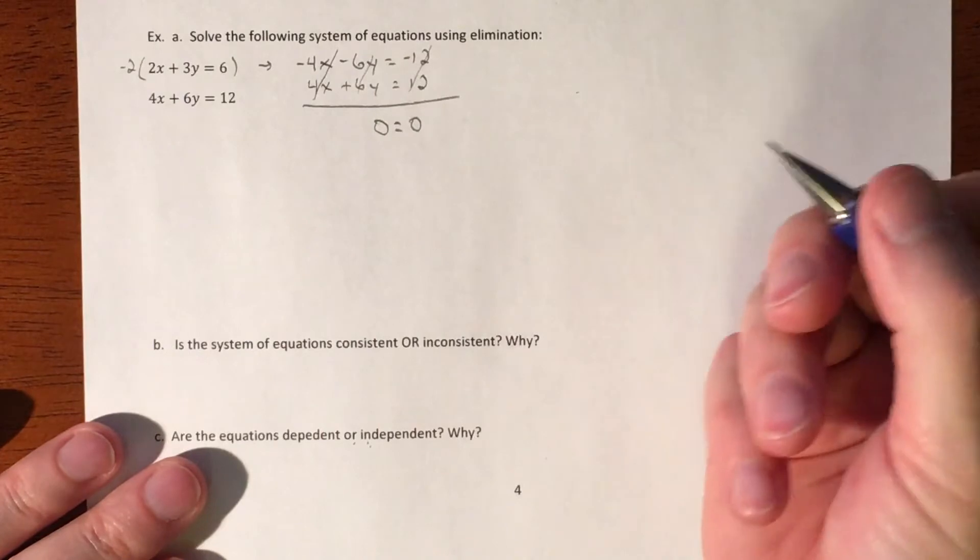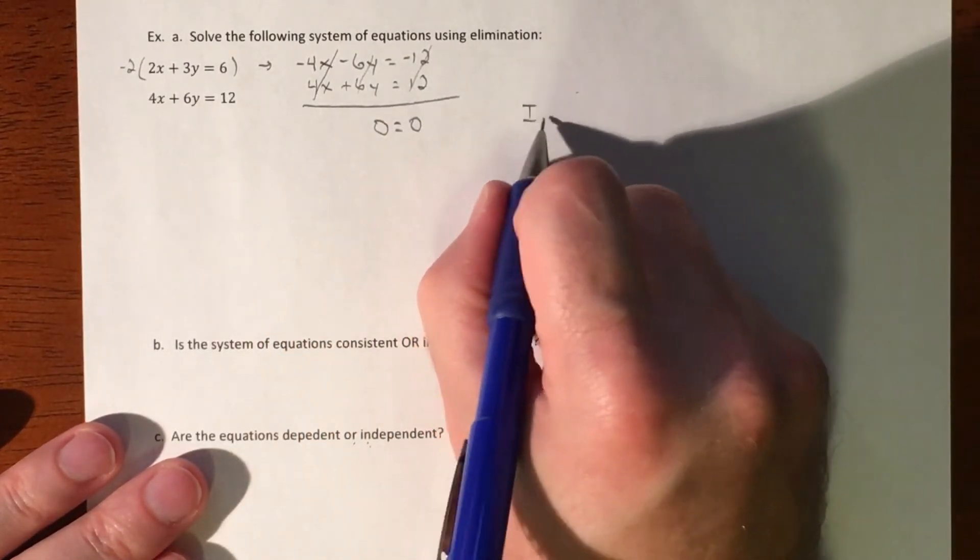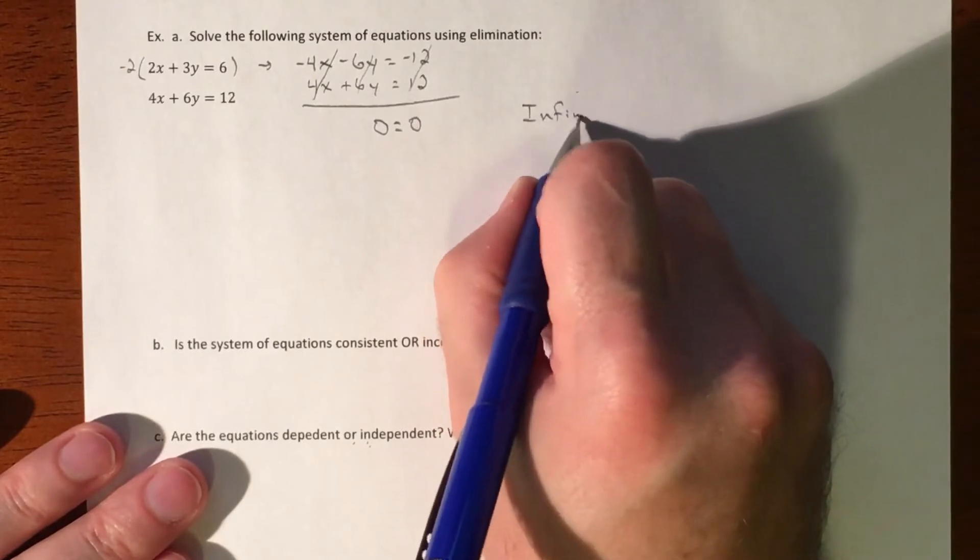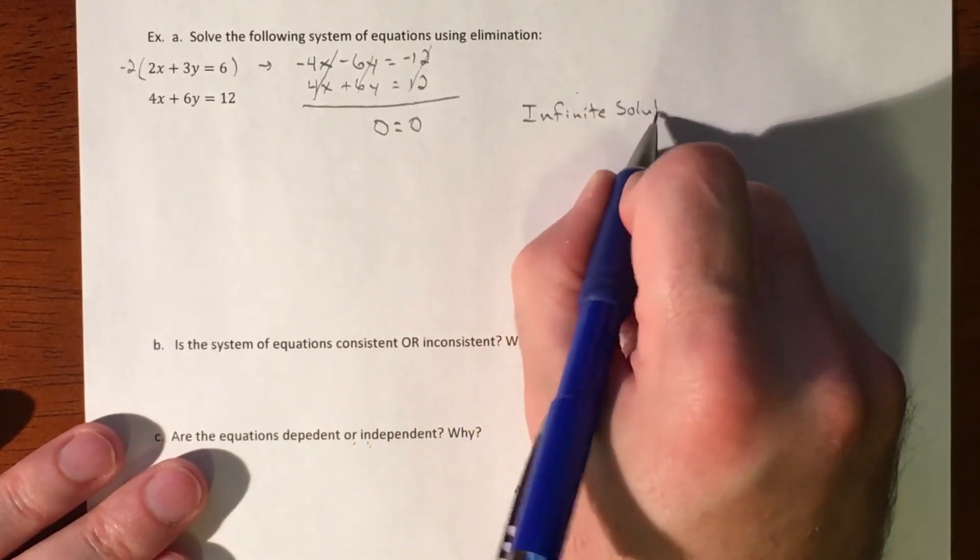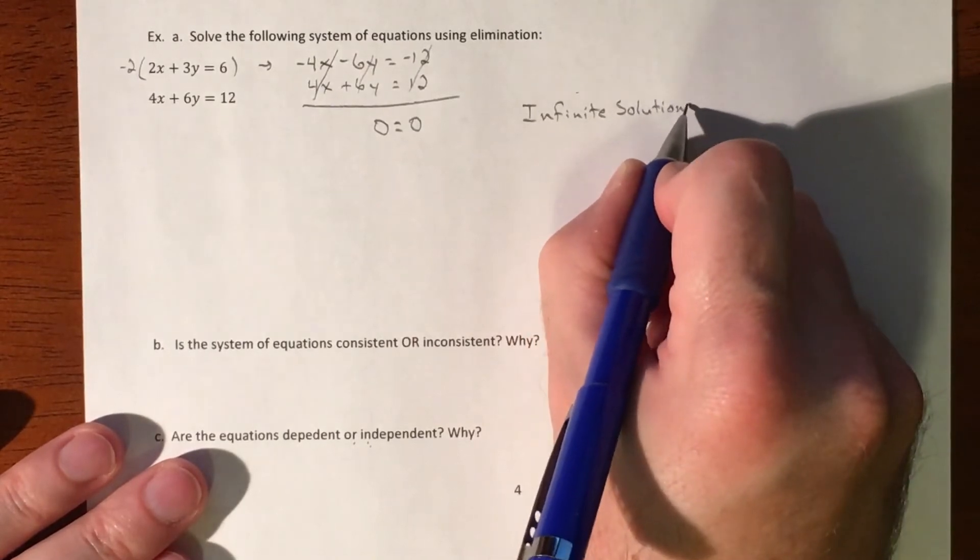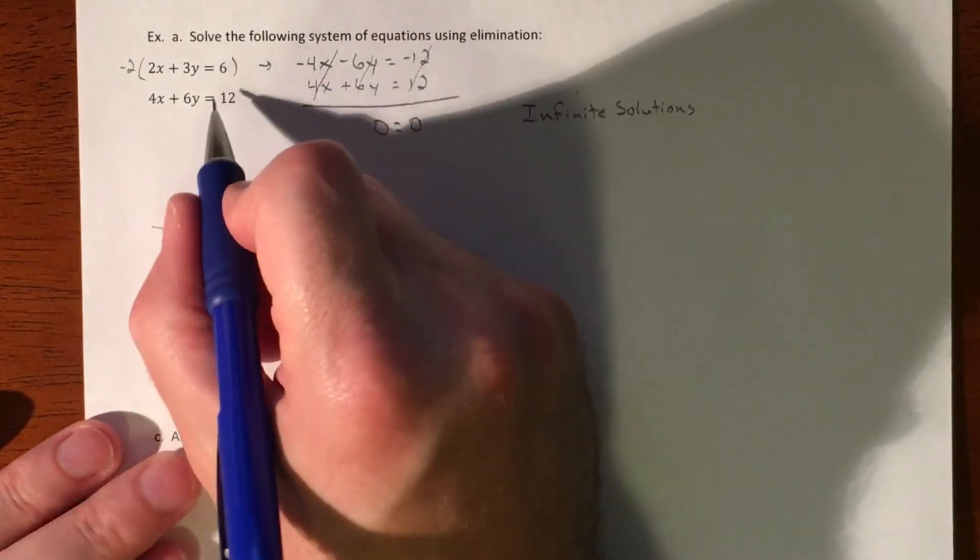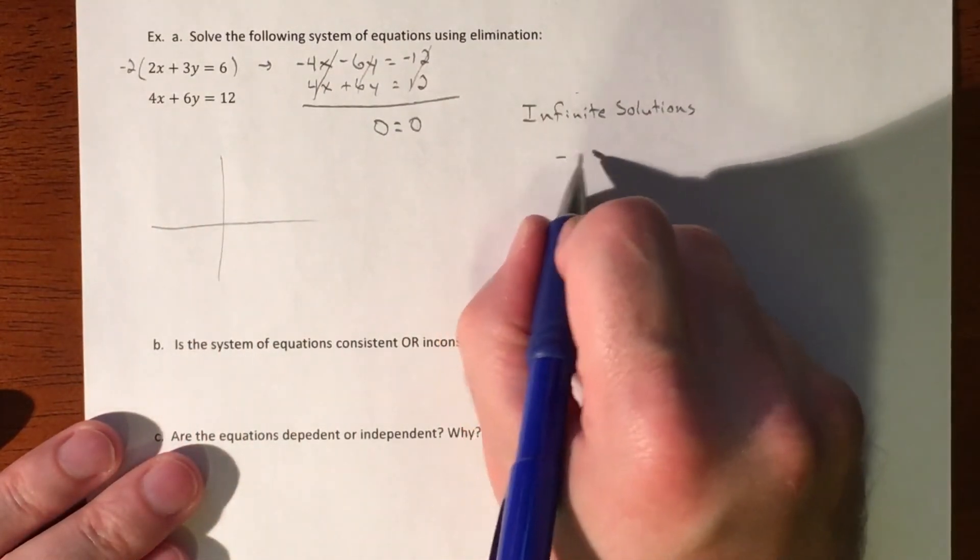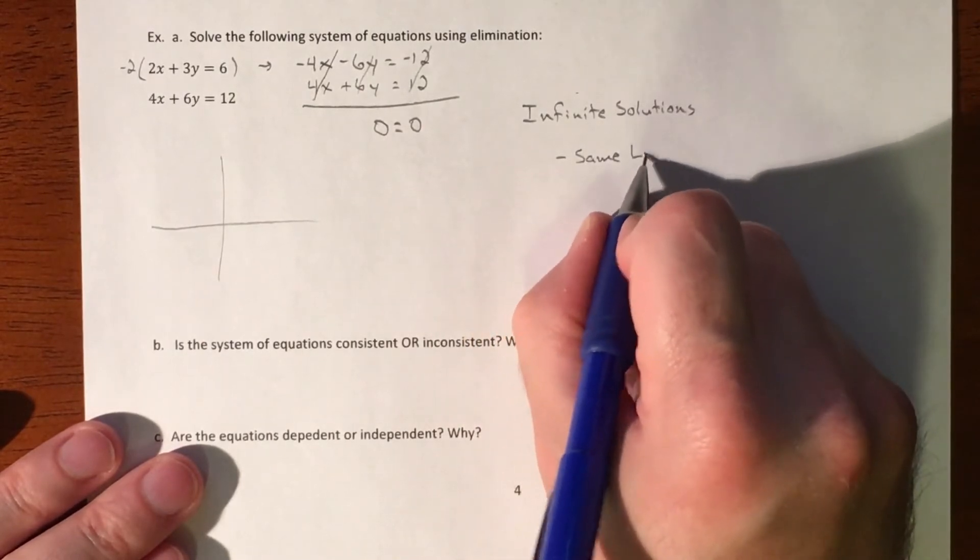0 equals 0 is the other special case. 0 does equal 0, so that is infinite solutions. However, infinite solutions is too vague, because if you were to graph this, these two lines are on top of each other. That's our visual, so they are the same line.